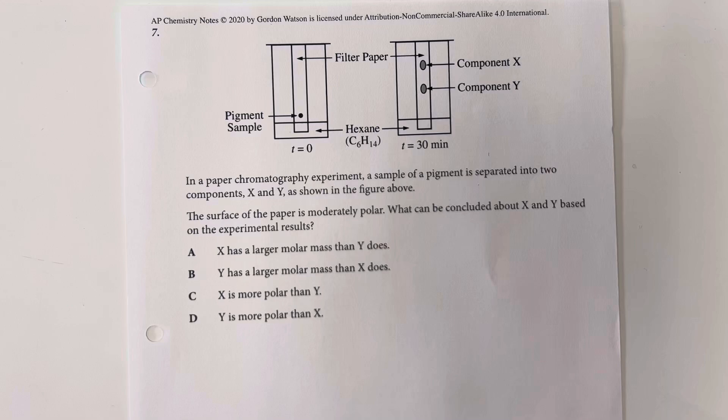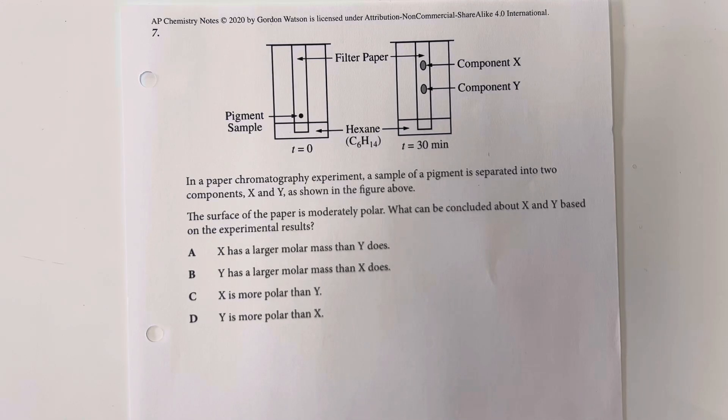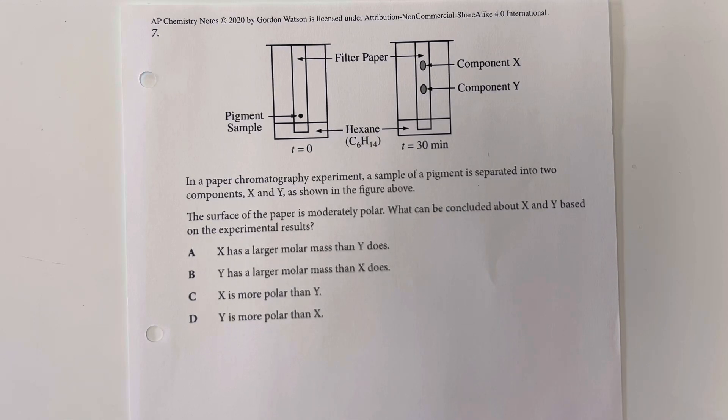In paper chromatography experiment, a sample of a pigment is separated into two components, X and Y, as shown in the figure above. The surface of the paper is moderately polar. What can be concluded about X and Y based on the experimental results?